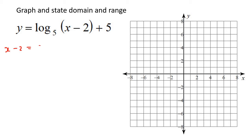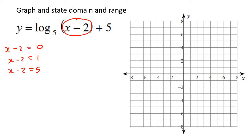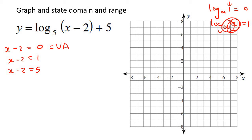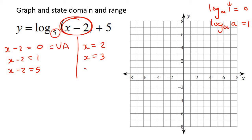For the next example: make x minus 2 equal to 0 — that's to find the vertical asymptote. Make it equal to 1 — that's so we can use the property where log_a(1) equals 0. And make it equal to the base, which is 5 — that's so we can use the property where log_a(a) equals 1. There's a method to how we're doing these things. Solving gives x equals 2, x equals 3, and x equals 7.